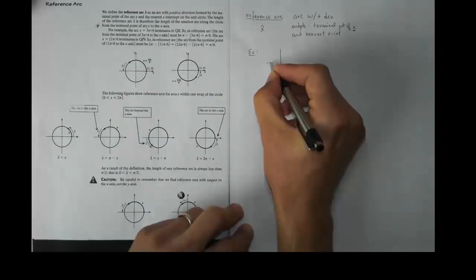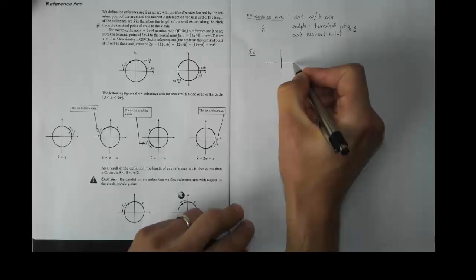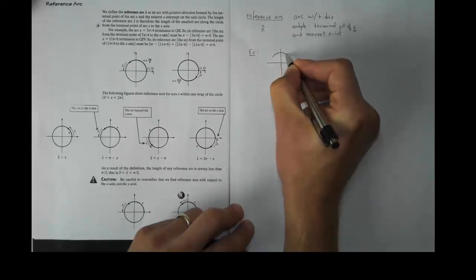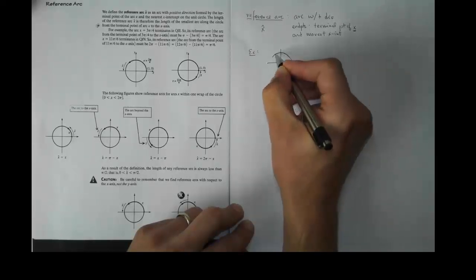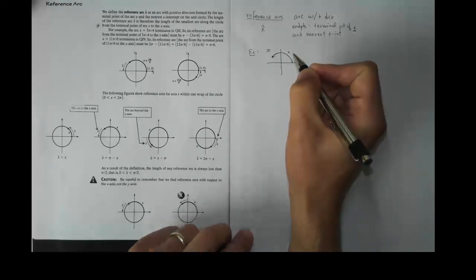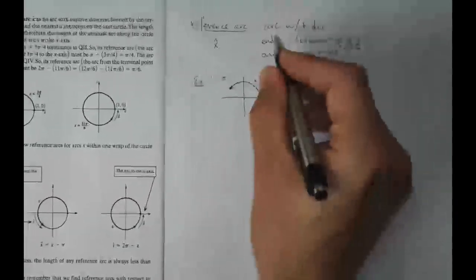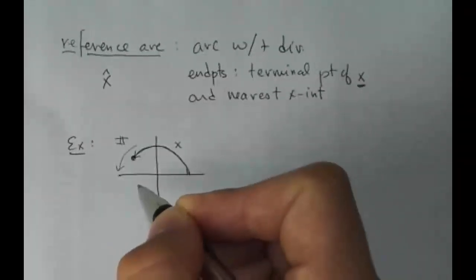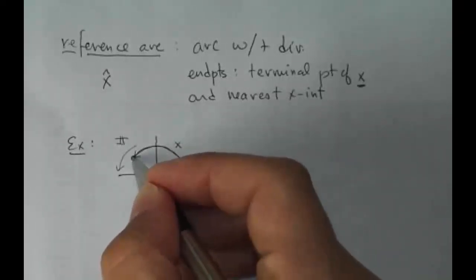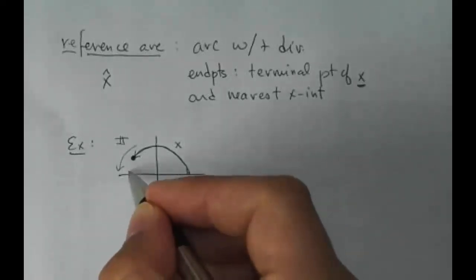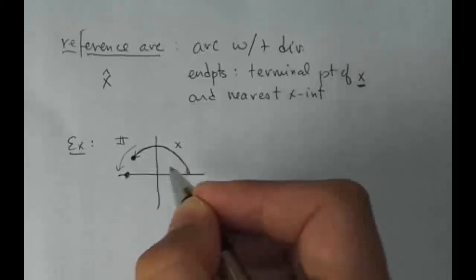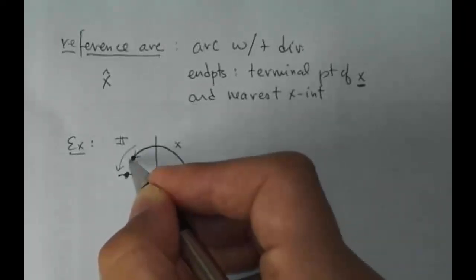For example, the arc x equals 3π/4. Let's draw that — the arc 3π/4 terminates in quadrant 2. I know that it's π/2 and then another quarter, so 3π/4 goes out to here. So this is x. Its reference arc is the arc from the terminal point of 3π/4 to the x-axis. The reference arc has positive direction, so it's got to go that way. Its endpoints include the terminal point of x right there, and the nearest x-intercept. The unit circle crosses here and there, and that's it — so I've got to go from here to there. This must be the reference arc.